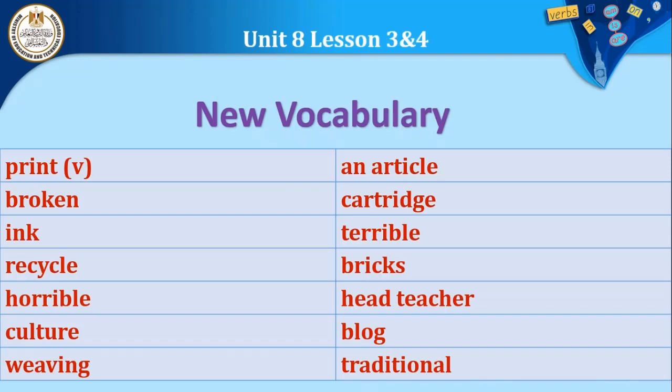'Broken' — this comes from the verb 'break'. We agreed that the third form of a verb is used in English as an adjective, meaning a describing word. So 'broken' means broken or out of order — in both cases it functions as an adjective and comes before a noun. 'Ink' is a noun meaning the ink used in printing.